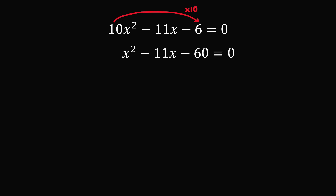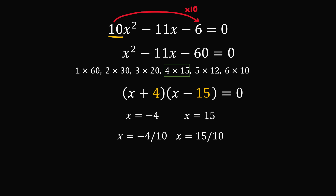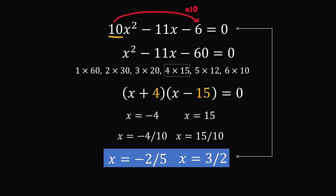We need to factor this quadratic. We just did this in the last example: x plus 4 times x minus 15 equals 0. So the roots of this quadratic are x equals minus 4 and x equals 15. To recover the roots of the original quadratic, we divide by the factor of 10: minus 4 over 10 and 15 over 10. This gives the two roots x equals minus 2 over 5 and x equals 3 over 2, and these are the roots of the original quadratic equation.